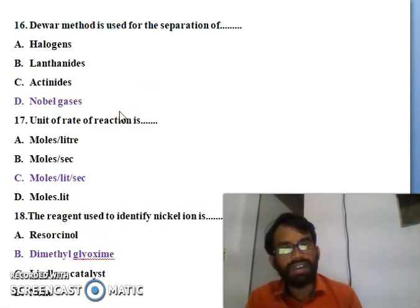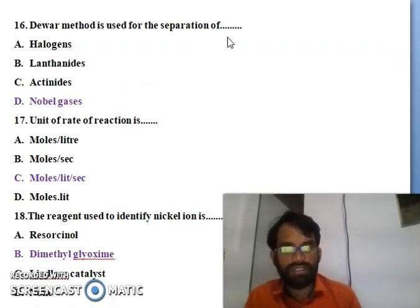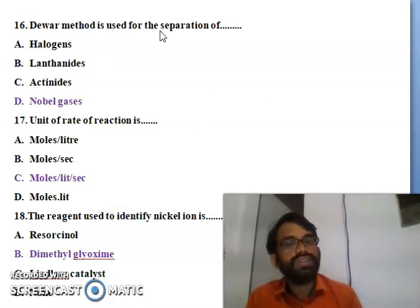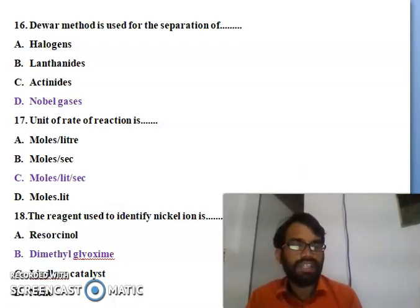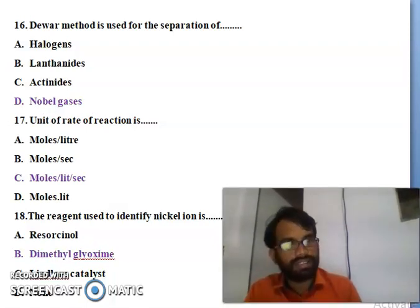Sixteenth question: the Dewar method is used for the separation of - halogens, lanthanides, actinides, or noble gases? The Dewar method is used for the separation of noble gases. So noble gases is the right answer for the sixteenth question.